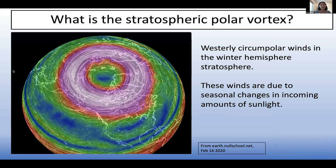The stratospheric polar vortex is shown here from February 16th, 2020 from earth.nullschool.net — this is an unusual state of the northern hemisphere polar vortex when it was really strong, very symmetric and annular. A lot of times the northern hemisphere vortex is much more wavy, but this was a really unusual event that I'll talk about further later on.